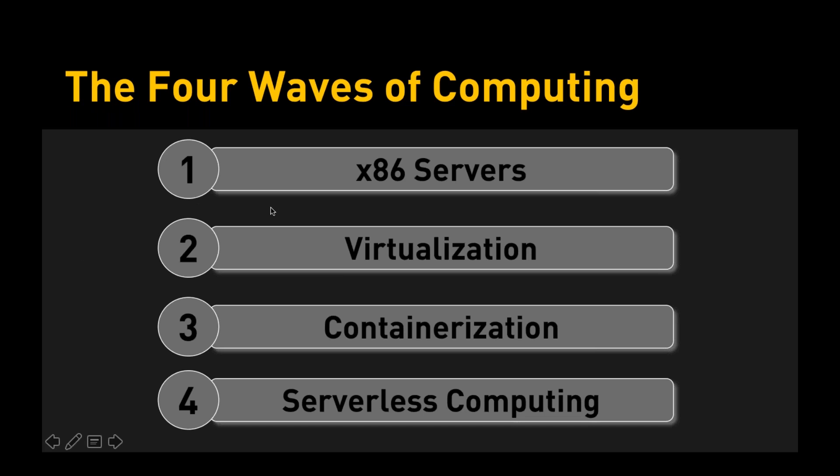We are actually in a very interesting transformation and I call this the fourth wave of computing. If this is the fourth wave, what are the first three? Well, x86 servers has been the very first wave of computing beyond mainframes and midranges. x86 servers have democratized computing by becoming more and more accessible and that's when the actual IT revolution started. Small and medium businesses could afford to run servers in their environments. Client servers started to become more and more popular, that eventually led to web and so on, but x86 was the first wave of computing.